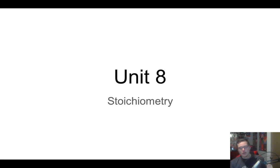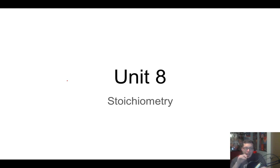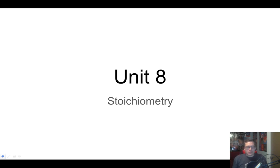All right gang, here we go. Chem 1, Unit 8, Part 1. We're talking about stoichiometry. This unit is kind of a smaller unit — it's only got three parts — but every single thing in this unit is really important for your chemistry skills moving forward. We're only a little bit into the semester, and all of this stuff is going to apply throughout the rest of the semester. So it's really important to do practice problems and master it now. So, stoichiometry, here we go.